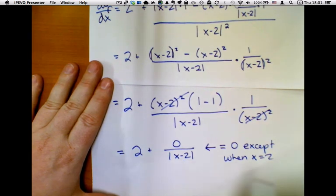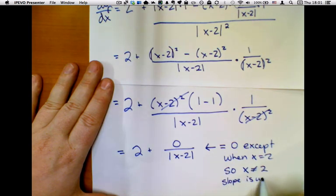When x equals 2, this is undefined. So x cannot equal 2. Slope is undefined at x equals 2.